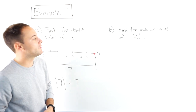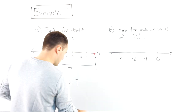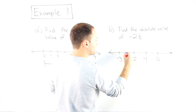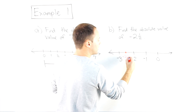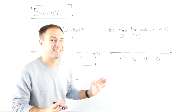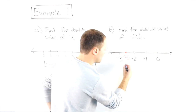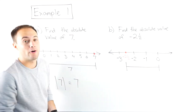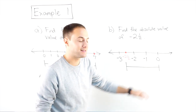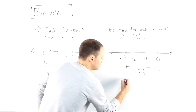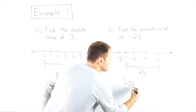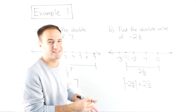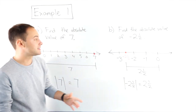Let's look at part B: find the absolute value of negative two and a half. I'm going to draw a quick number line. Negative two and one half would be halfway between negative two and negative three. Again, what is the distance from negative two and a half to zero? Hopefully you notice that that distance is two and a half — it's two and a half away. The absolute value of negative two and a half is positive two and a half. These are distances, so it's going to be positive.